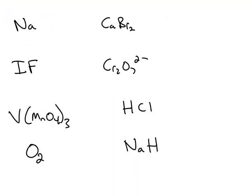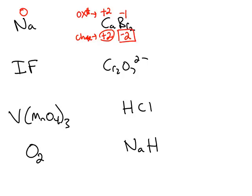The oxidation number of sodium — notice this is not a compound, this is just an element — and the charge of this element is neutral, so the oxidation number is zero. In a compound like calcium bromide, we start by giving bromine, the more electronegative element, an oxidation number of negative 1, because bromine needs one electron to satisfy the octet rule. The total charge of those two bromines is negative 2, so calcium must be positive 2. Note: each bromine atom has an oxidation number of negative 1, not negative 2.